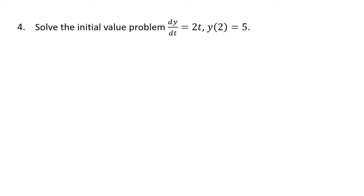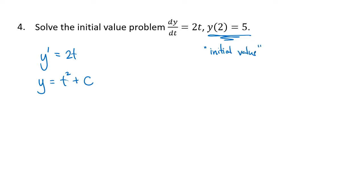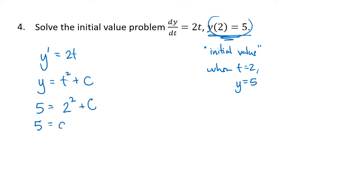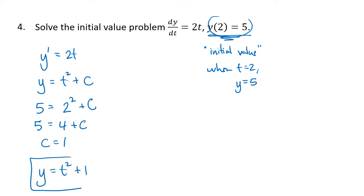In this case, we have dy/dt equals 2t. dy/dt just means y prime, so y prime equals 2t, and y is then going to be t squared plus c. The initial value y of 2 equals 5 means that when t equals 2, y equals 5. That tells us 5 equals 4 plus c, so c equals 1. Our solution to the initial value problem is not a family of functions, but a single function that not only solves the differential equation but also satisfies the initial value.